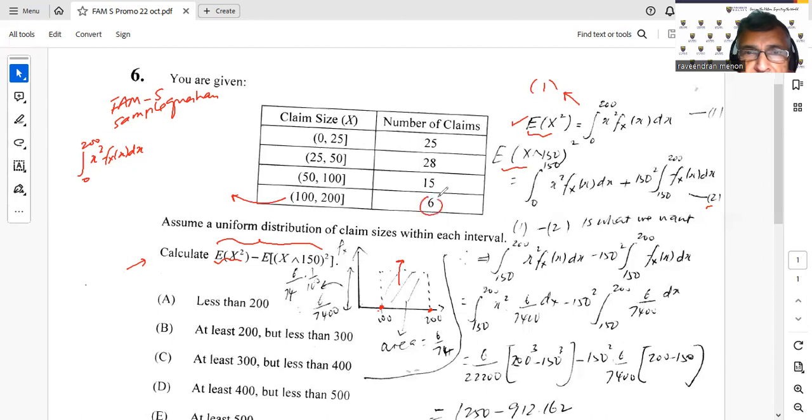So the probability here, that will be 6 divided by, if you add all these up, 25 plus 28 is 53, plus 15 is 68, plus 6 is 74. So the probability here of this will be given by the area here, will be 6 over 74. That's what we see here. This probability here will be 6 over 74. So I need the PDF, which is the height, which is what I need. So I can take fxx times, what is this? 100.